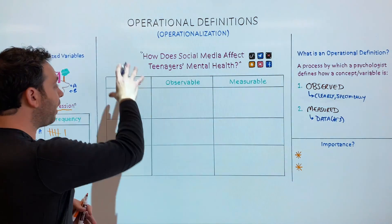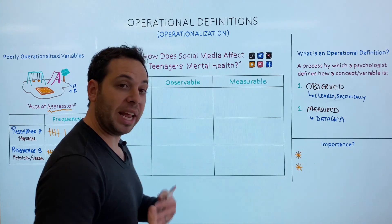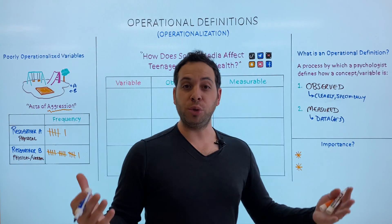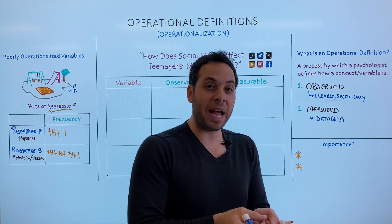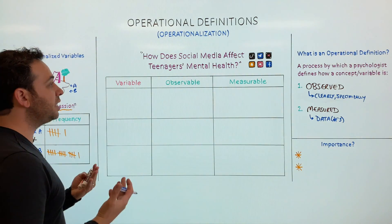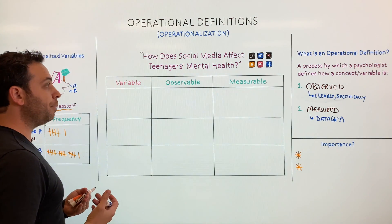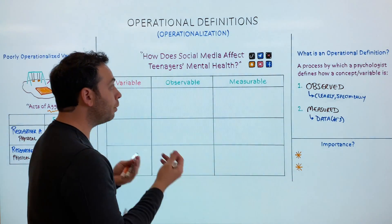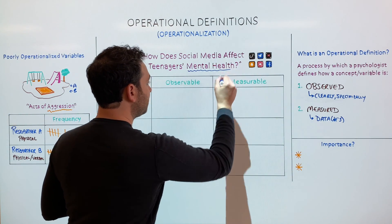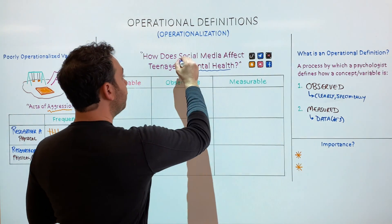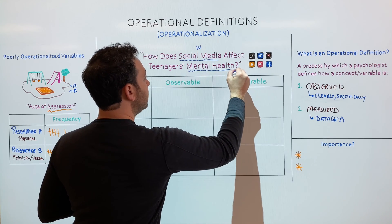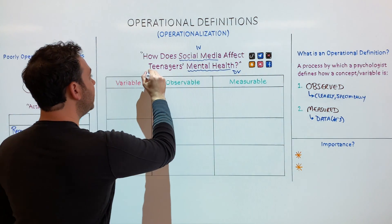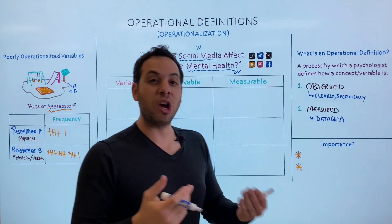Let's do an example study together to identify our variables, how we observe them, and how we measure and collect data. Our study is: how does social media affect teenagers' mental health? What variables or concepts do we need to observe and measure? The dependent variable is mental health — it's what we're measuring. Mental health is dependent on social media, which is our independent variable. We also have our participants, teenagers, as a variable we need to define.